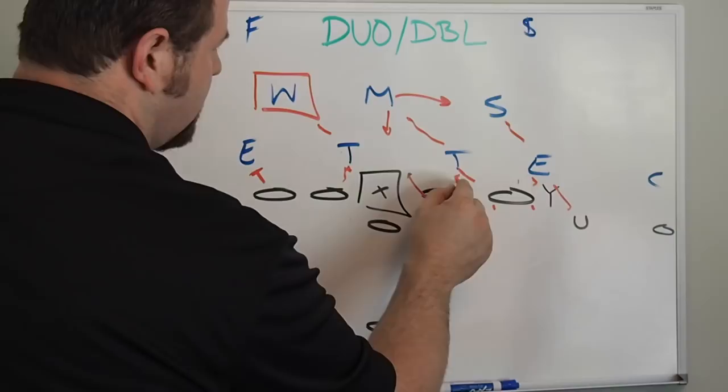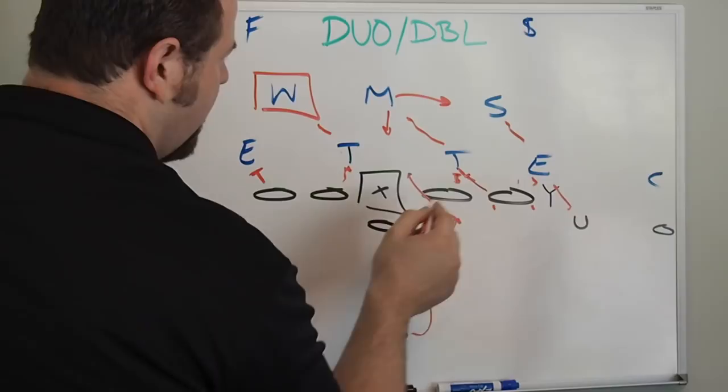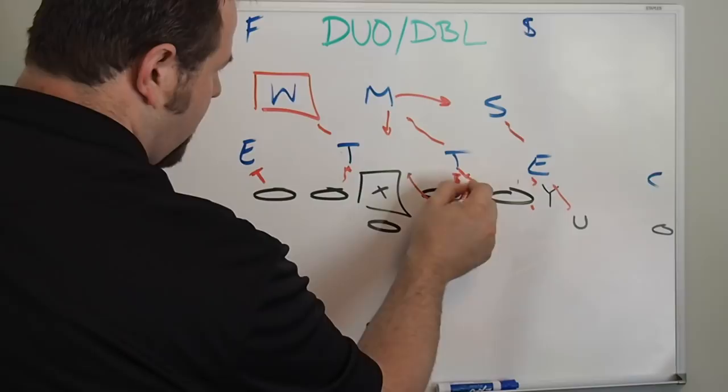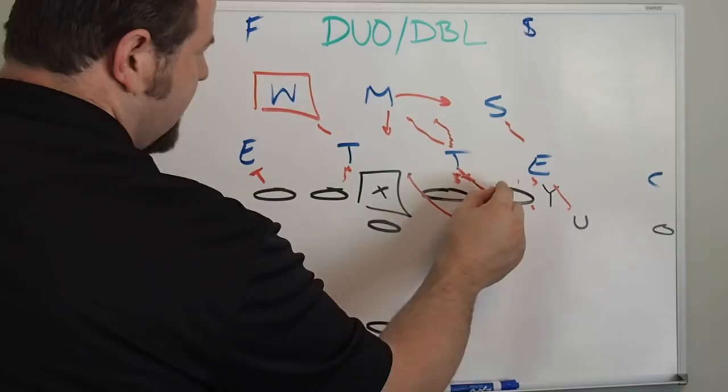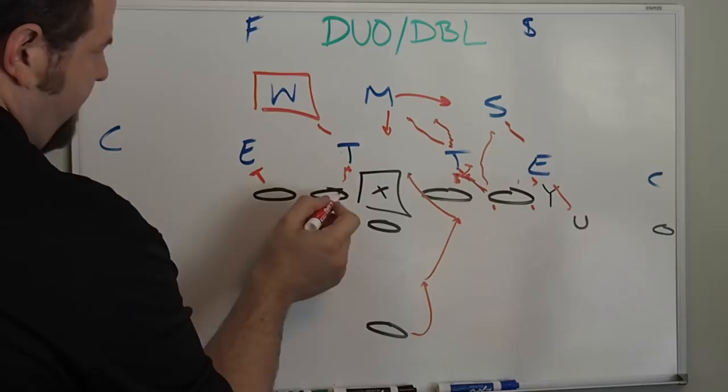This is a true gap double team. So you have a deuce block right here. You're coming in here, you can gallop in there. You come in here and you double team, it's a hard double team off the ball this way to the Mike. If it's a zone play, it's more of a zone double team type of thing up to the Sam.